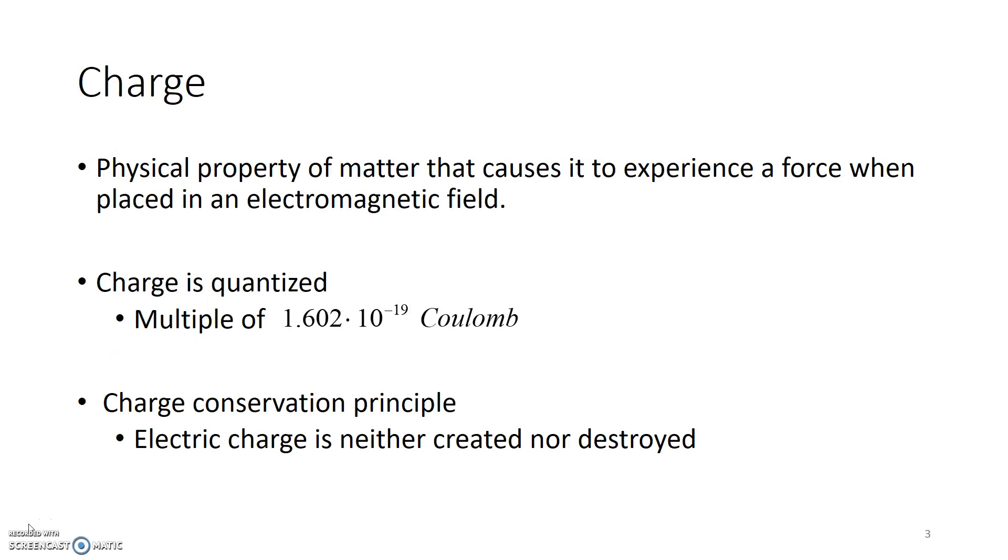Charge. Well, in a physical world, there are two kinds of charges, positive and negative charges, and charges are measured in a unit called coulomb. Charges are typically quantized, and a collection of charge is basically a multiple of 1.602 times 10 to the negative 19 coulomb, which happens to be the smallest amount of charge that is present in an electron.